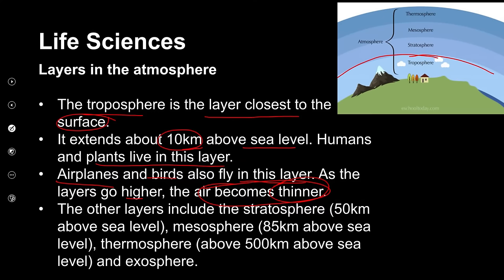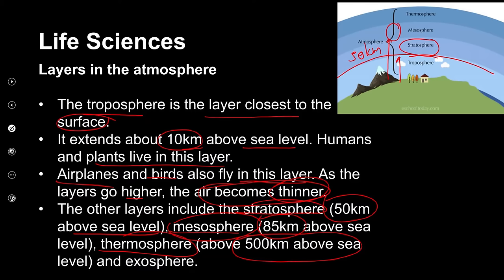The other layers include the stratosphere, which is about 50 kilometers above sea level. If we then look at the mesosphere, it is measured at about 85 kilometers above sea level — that's significantly high. And then finally, we have the thermosphere, which is about 500 kilometers above sea level. Surrounding the atmosphere, we get into the outer space called the exosphere. So these are essentially the layers in the atmosphere.